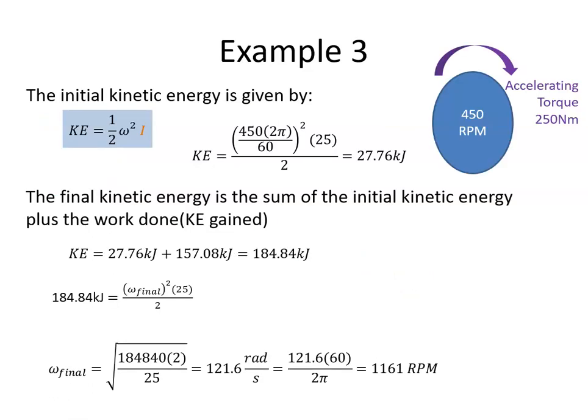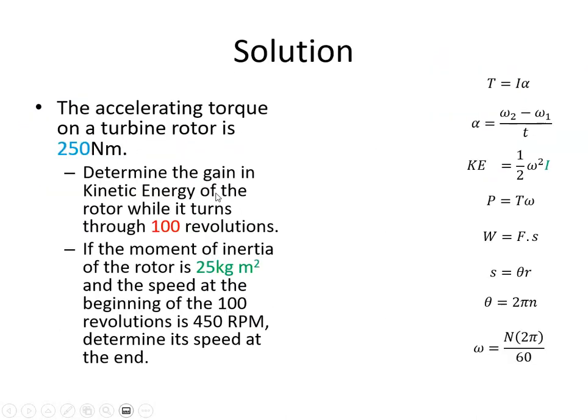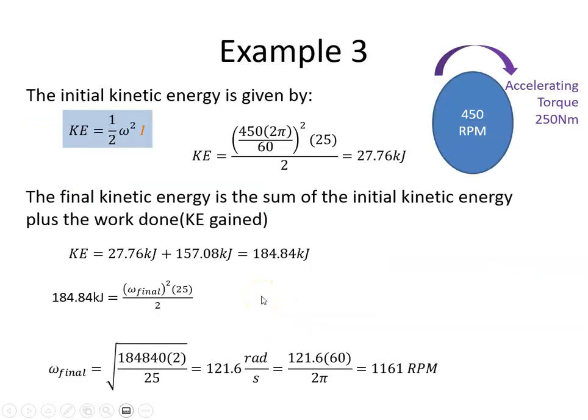The second part of the question was to work out the RPM at the end. The initial kinetic energy is given by KE equals half omega squared I. Going back to the question, we're told the moment of inertia of the rotor is 25 kg·m² and the speed at the beginning of the 100 revolutions is 450 RPM.